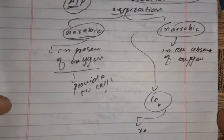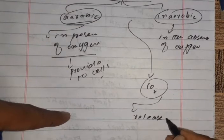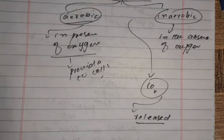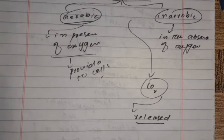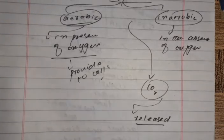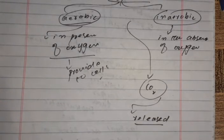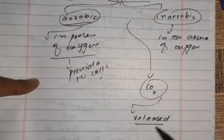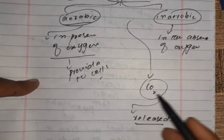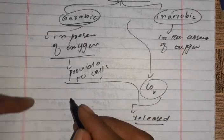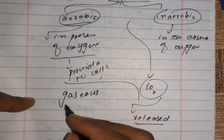The carbon dioxide produced during cellular respiration is taken out of the cells and ultimately from the body — it is released. Taking in oxygen and giving out carbon dioxide is termed as gaseous exchange.